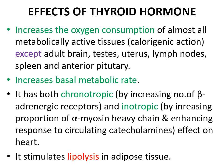Exceptions include adult brain, testis, uterus, lymph nodes, spleen, and anterior pituitary. It increases the basal metabolic rate. Thyroid hormone increases active transport of ions through the cell membrane by activating enzymes such as sodium-potassium ATPase. Because this process uses energy and increases heat produced in the body, it may be one mechanism by which thyroid hormone increases metabolic rate. Excess thyroid hormone can increase the basal metabolic rate 60 to 100% above normal.